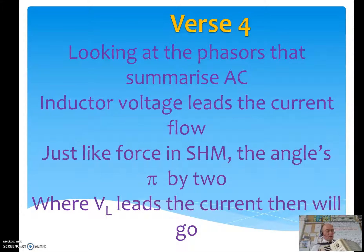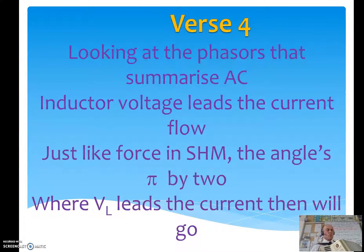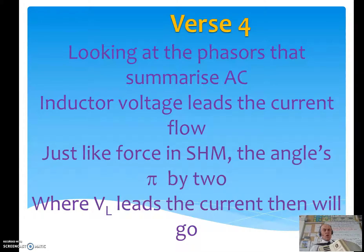Looking at the phasors that summarize AC, inductive voltage leads the current flow. Just like forcing SHM, the angle's pi by 2 — where V-L leads, the current then will go.